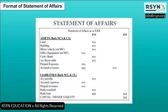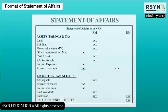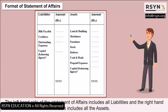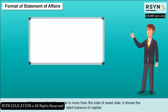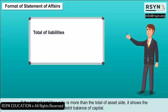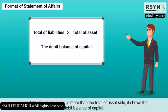Format of Statement of Affairs: The left-hand side of the statement of affairs includes all liabilities, and the right-hand side includes all assets. If the total of the liabilities side is more than the total of the assets side, it shows the debit balance of capital.